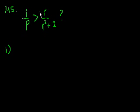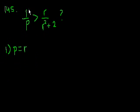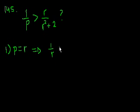Statement number 1. I should look at the statements first. p is equal to r. So let's see if we can simplify this. If p is equal to r, then we get 1 over r instead of a p — is greater than r over r squared plus 2.